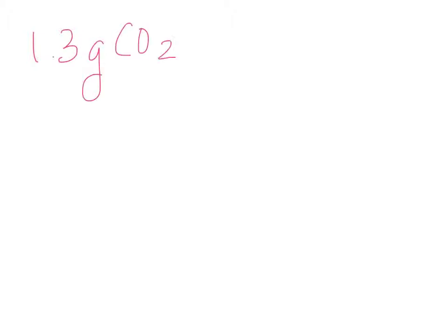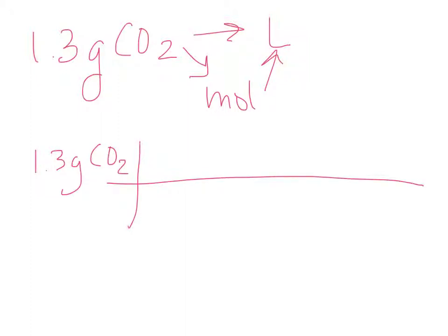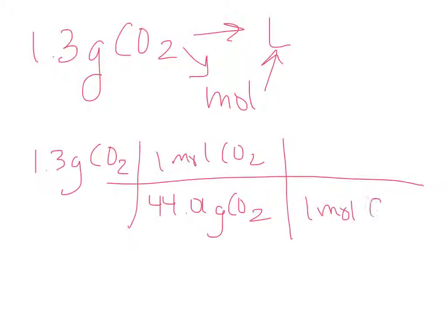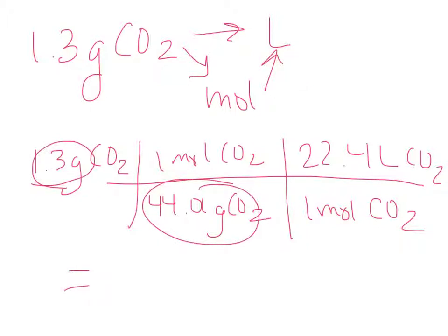So if I'm starting off with my 1.3 grams of carbon dioxide and I'm going to liters, my first step is going to moles, and then from moles to liters. My 1.3 grams of carbon dioxide — I know that I have 44.01 grams of CO₂ for every one mole of CO₂, and for every one mole of CO₂, I have 22.4 liters of CO₂. I plug that all into my calculator: 1.3 grams divided by 44.01, times 22.4.